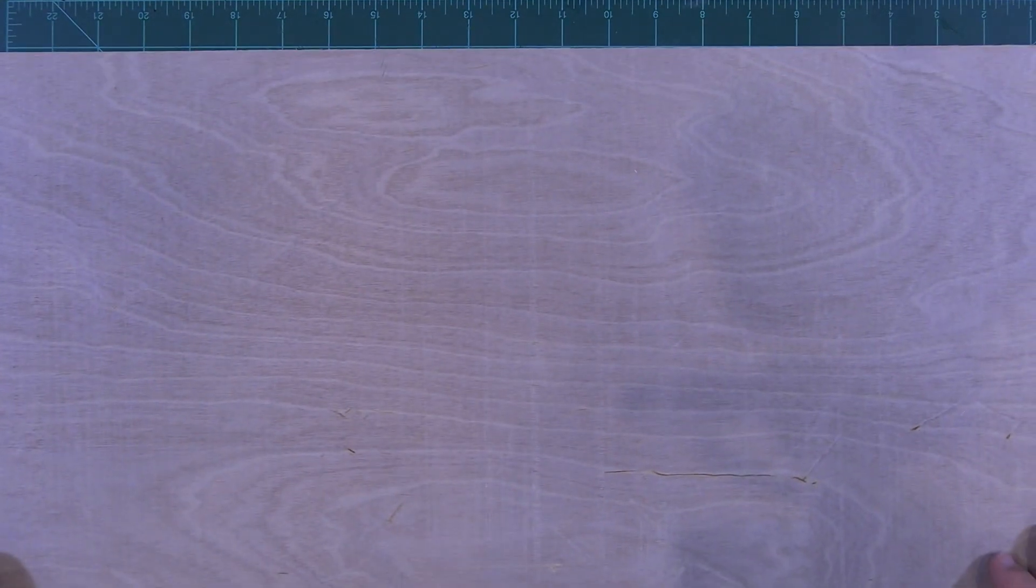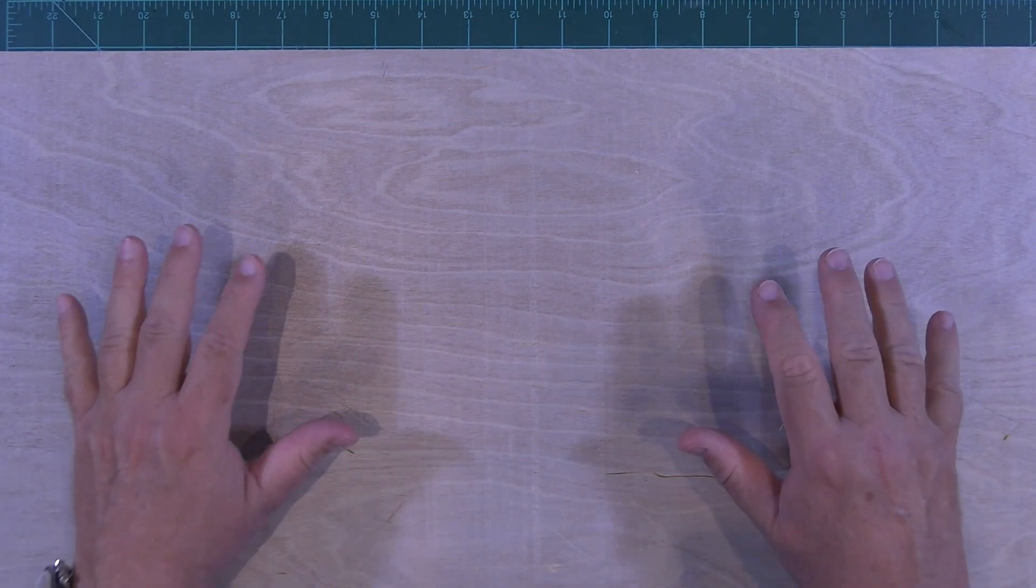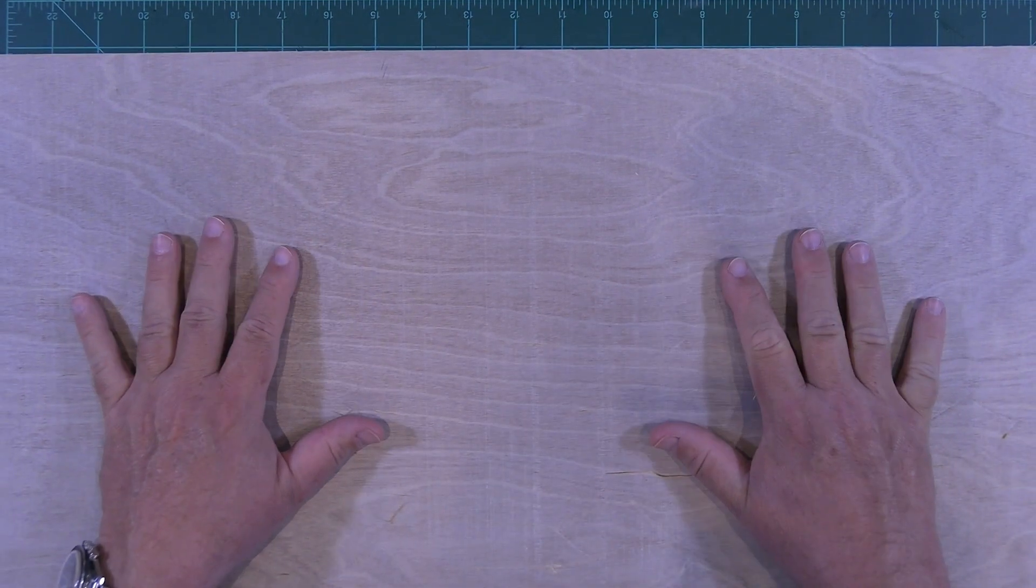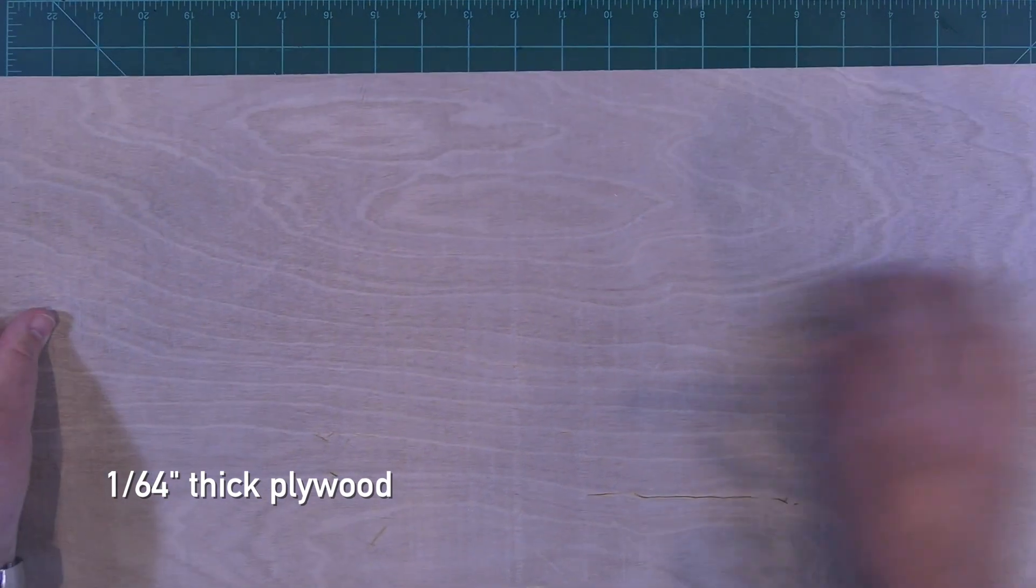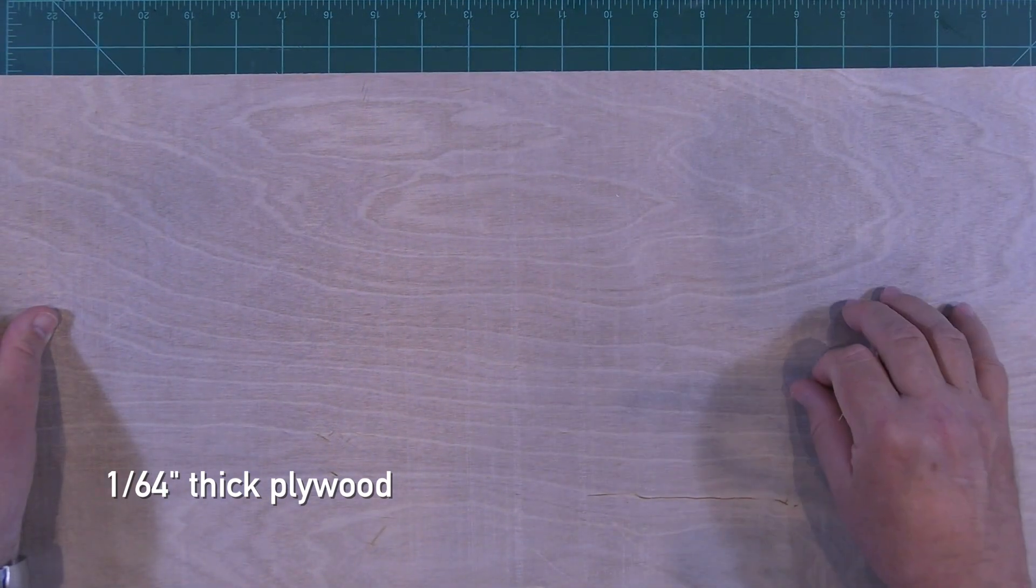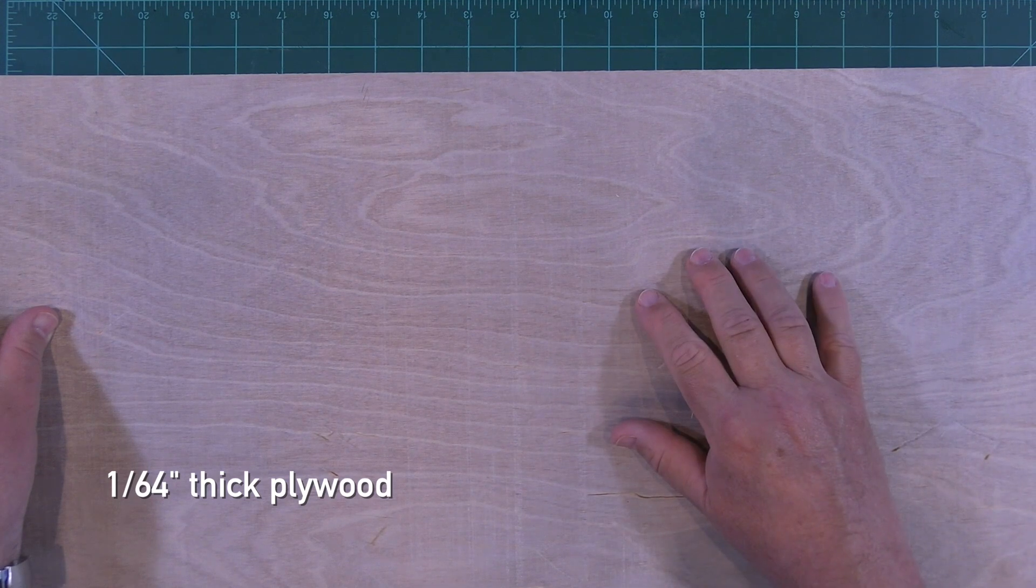One way is to skin your fins with paper, plastic, or even fiberglass. One of my favorite tricks is to skin fins with 1/64 inch plywood as it cuts and sands easily. It also has a very tight grain that needs very little filling and finish sanding.